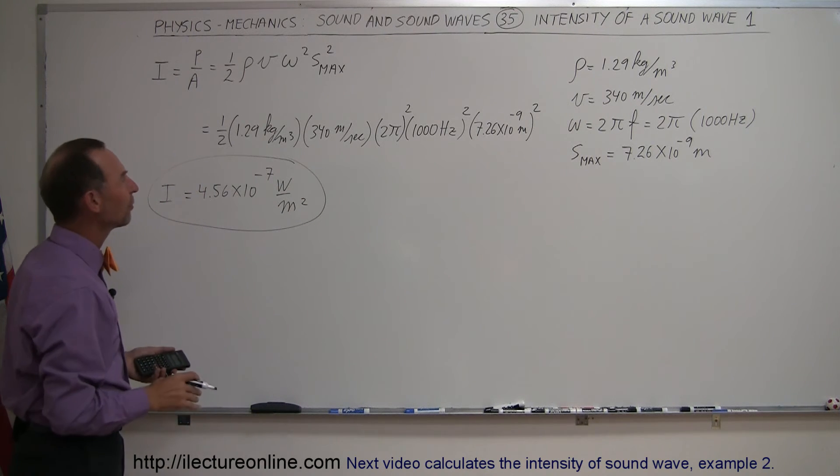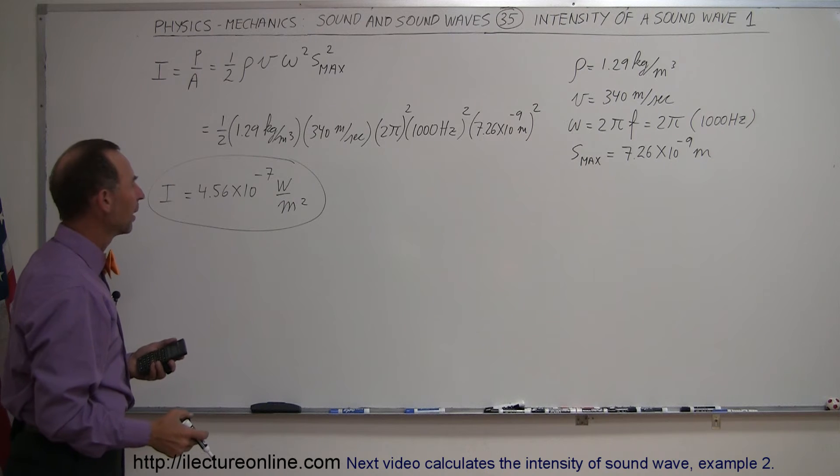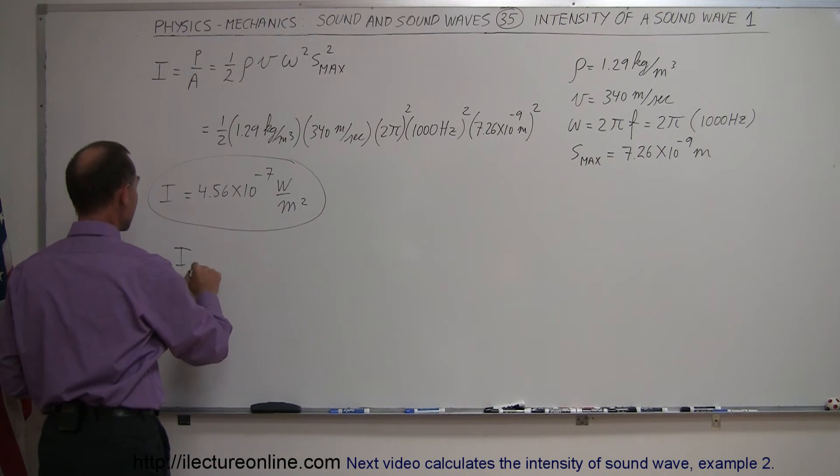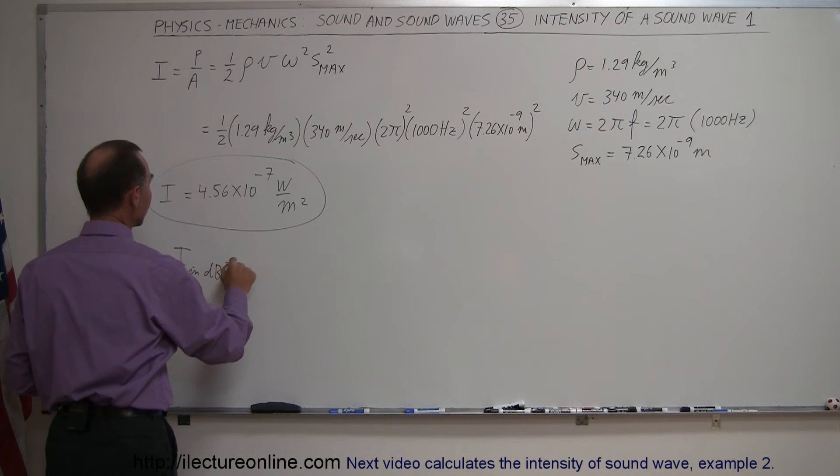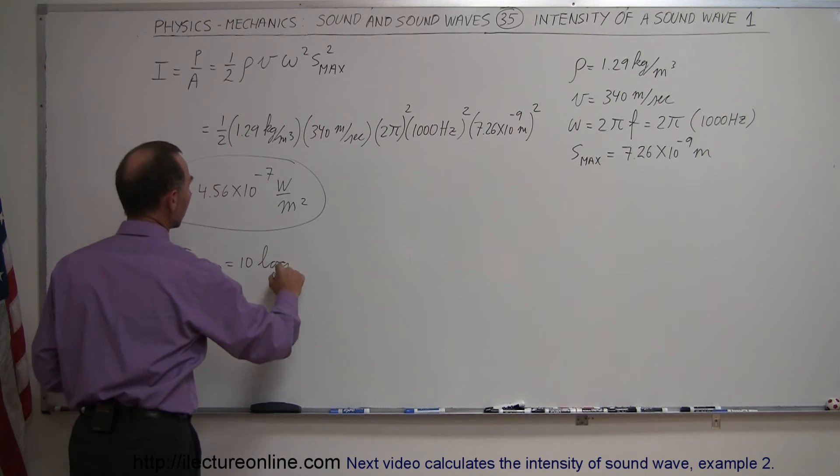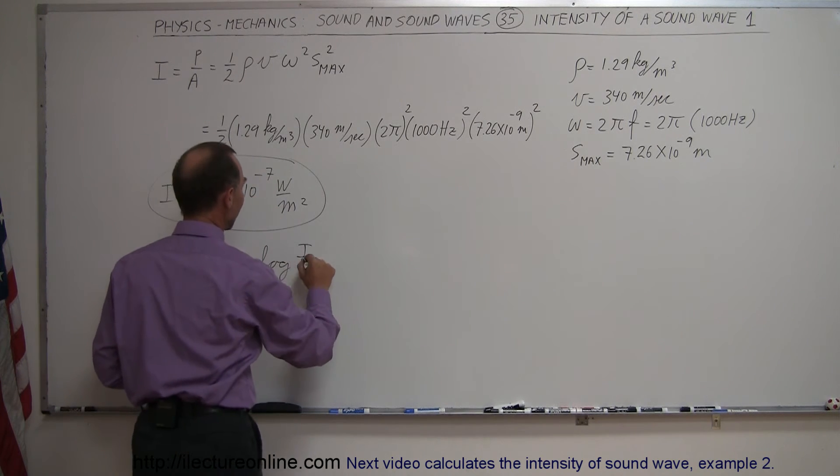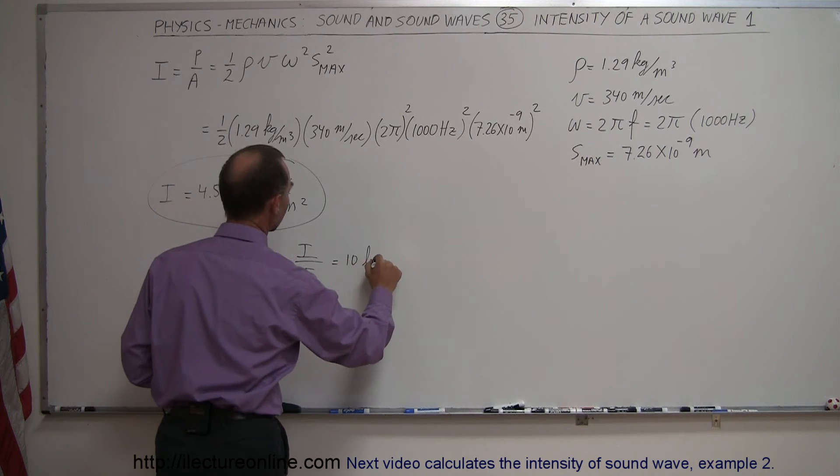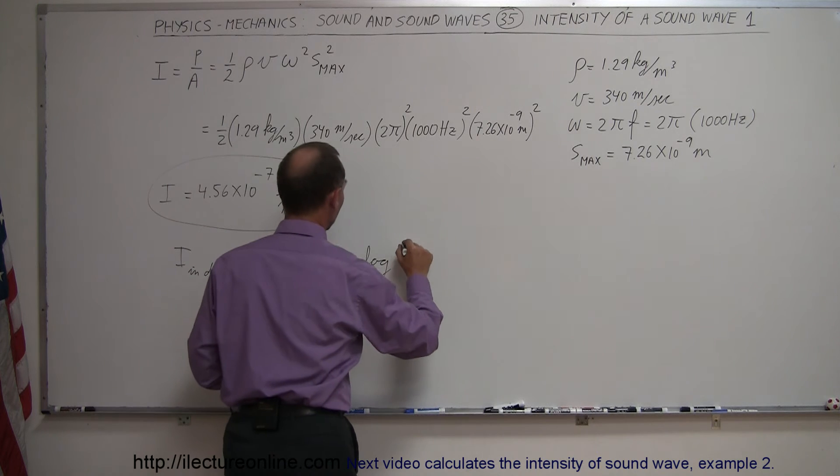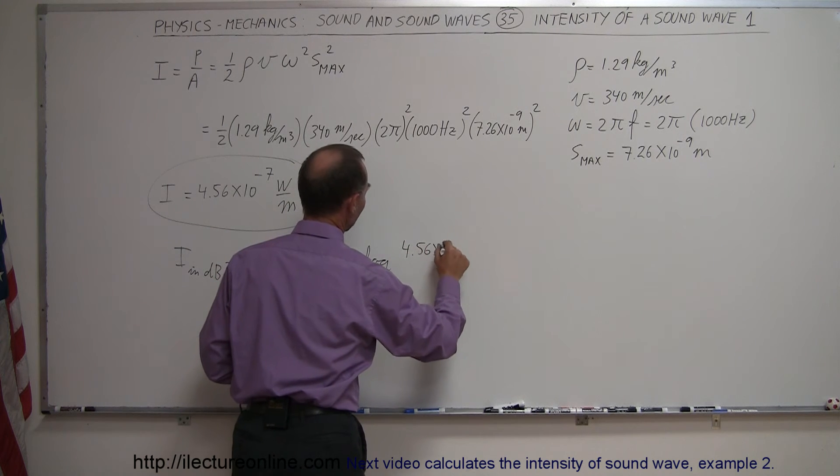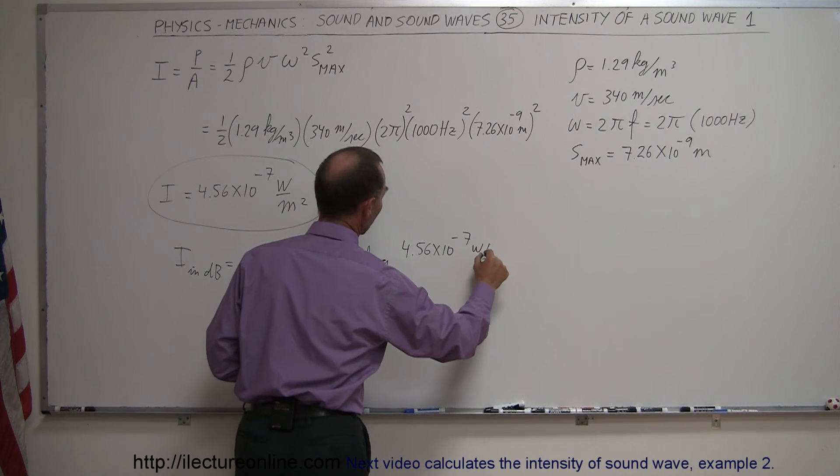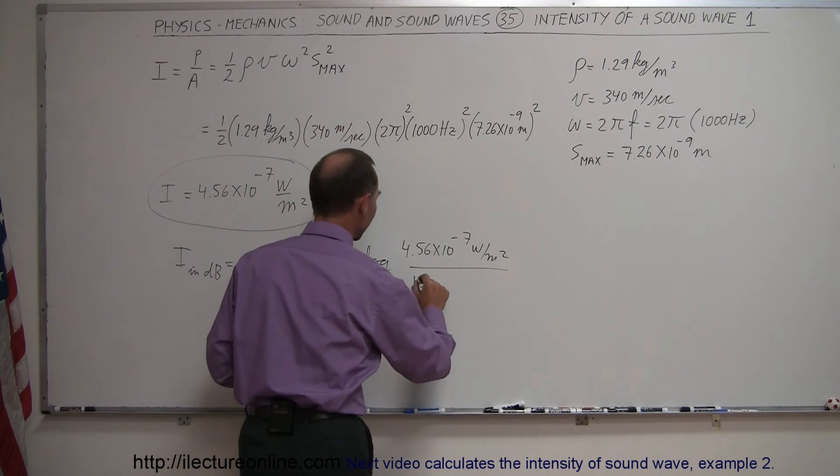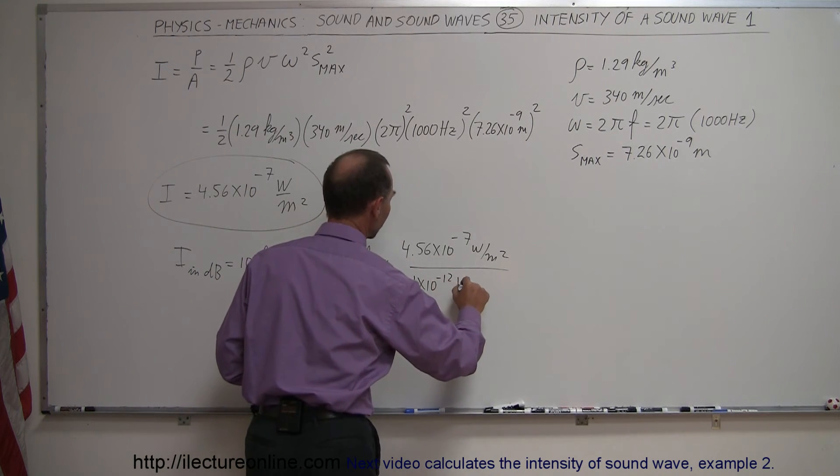Alright, that sounds like it's about the intensity of normal human speech. Now let's convert that to decibels. So intensity in decibels is equal to 10 times the log of the intensity divided by the reference intensity. So this would be 10 times the log of this number, 4.56 times 10 to the minus 7 watts per square meter. And of course the base intensity that we compare that to would be 1 times 10 to the minus 12 watts per square meter.